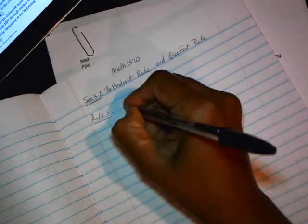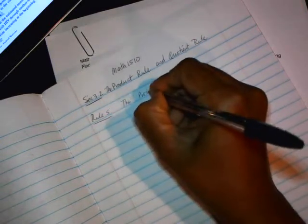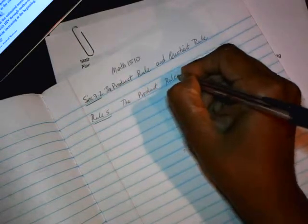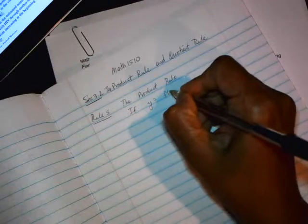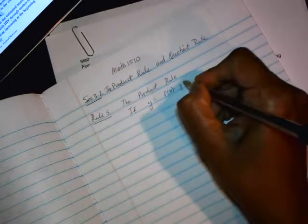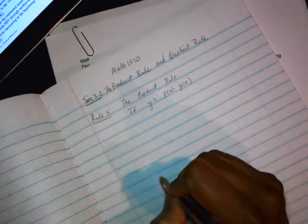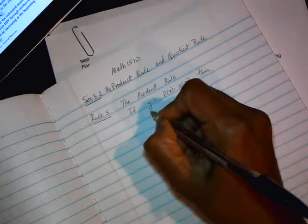So rule 5 is the product rule. And as the name indicates, we're looking at product of two functions. So if you have y as equal to the product of two functions, f of x and g of x, so it's f times g, then according to this rule,